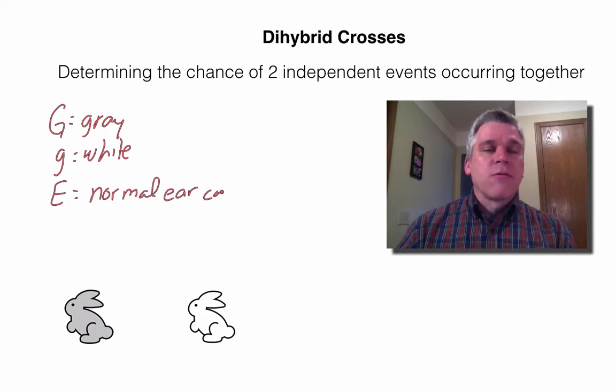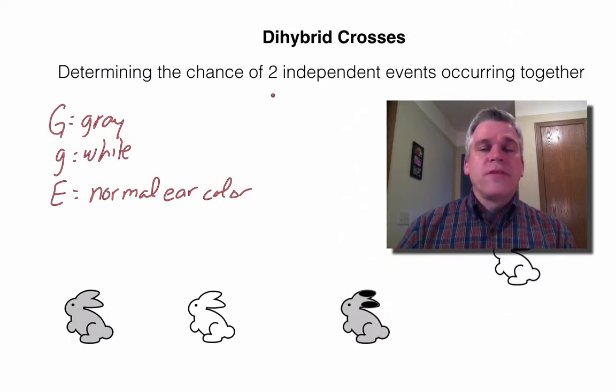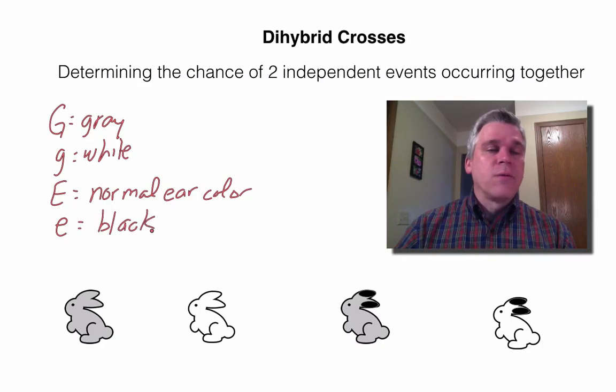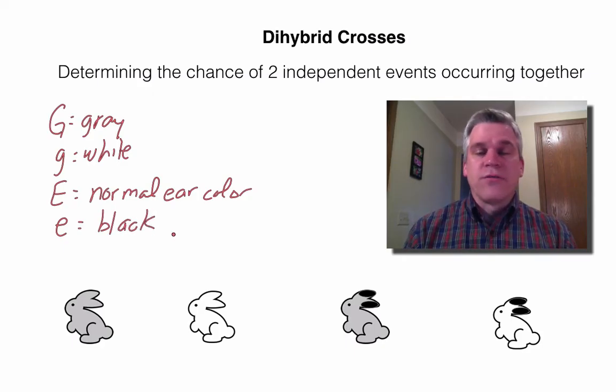So I'm going to use a capital E to represent the normal ear color, which means that it's just the same as the rest. Some of these have black ears. It's different than their fur color. So that's the recessive, and we will use a lowercase e for that one.